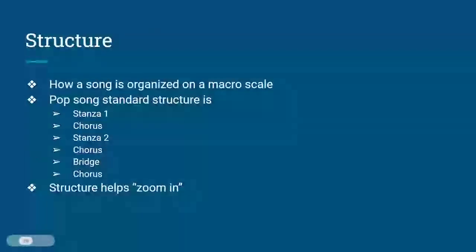Structure is how a song is organized on a macro scale. For example, a typical pop song is often organized into a stanza 1, chorus, stanza 2, chorus, bridge, chorus structure. Structure can zoom in a bit more — a chorus, for example, might be organized as two distinct bars made of two different chord progressions.